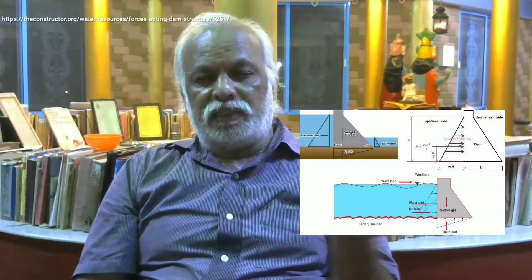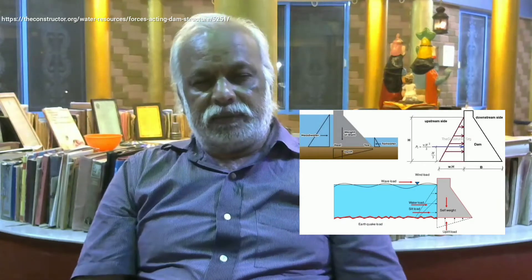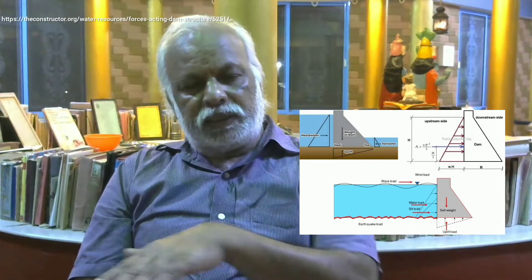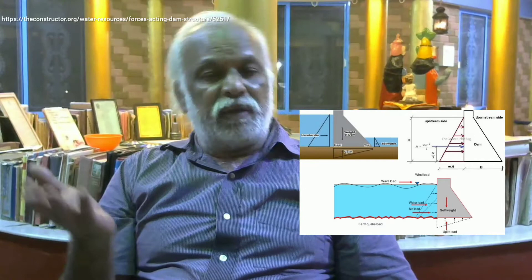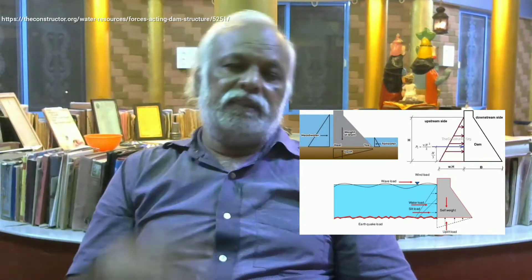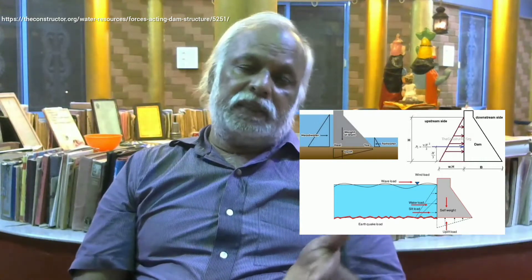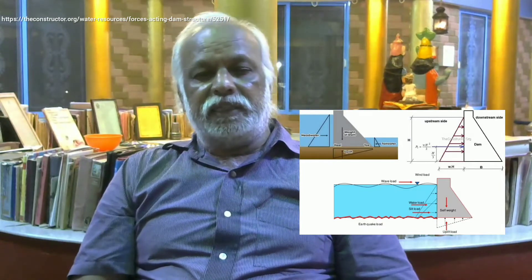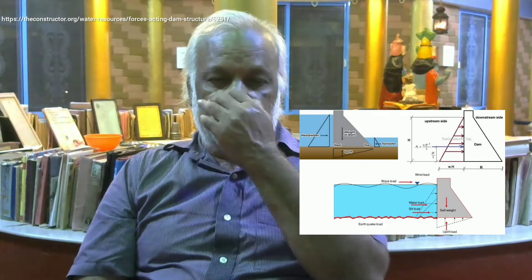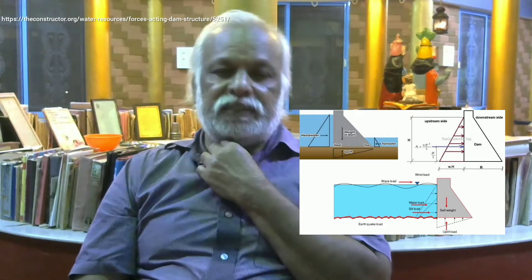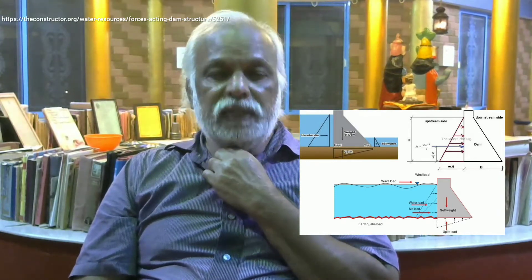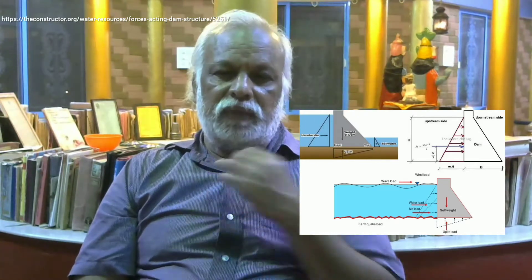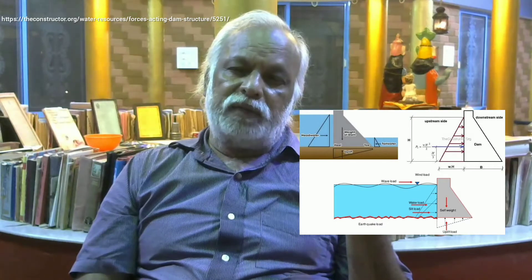The earthquake force has two effects: one in the horizontal direction and another in the vertical direction. Sometimes the horizontal acceleration may be favourable for the dam, and in another direction it will be unfavourable. Since the design is always pessimistic, we will take the effect of the horizontal acceleration acting in the direction which acts as an unfavourable external force that must also be resisted by the dam. External forces so far: hydrostatic force, earthquake force, and hydrodynamic force.